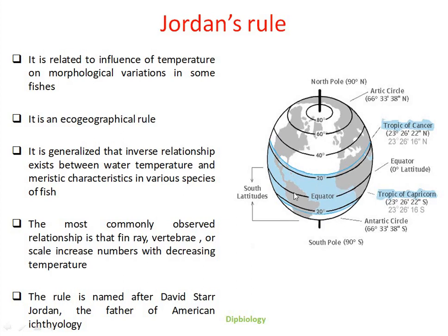If we look here, we can easily find that the regions near the equator receive maximum rainfall and sunlight and remain hot and humid throughout the year. If we move towards the poles, whether northern or southern, the temperature gradually decreases.